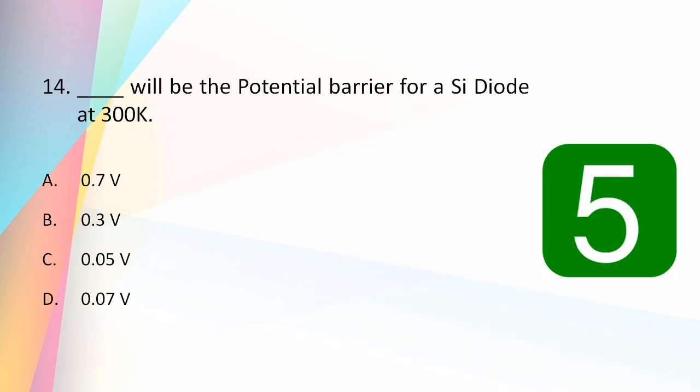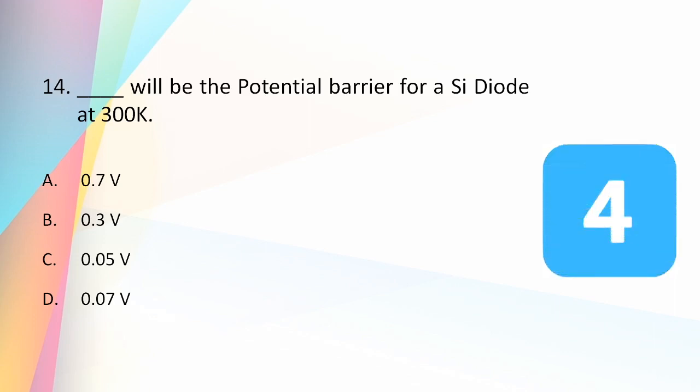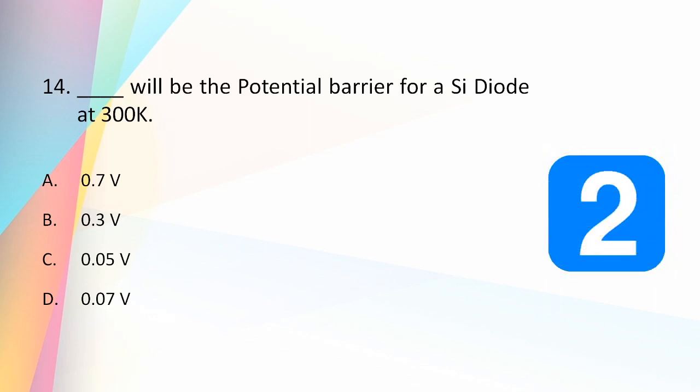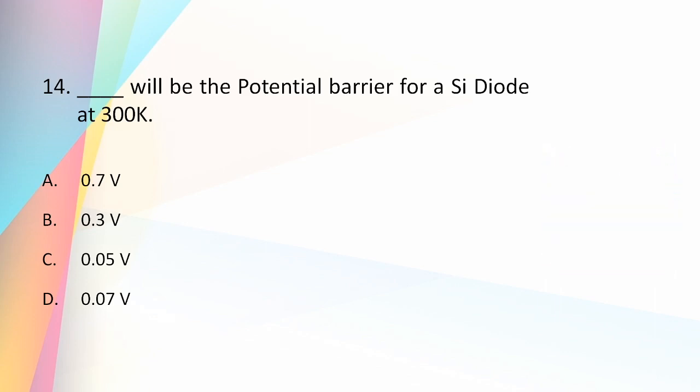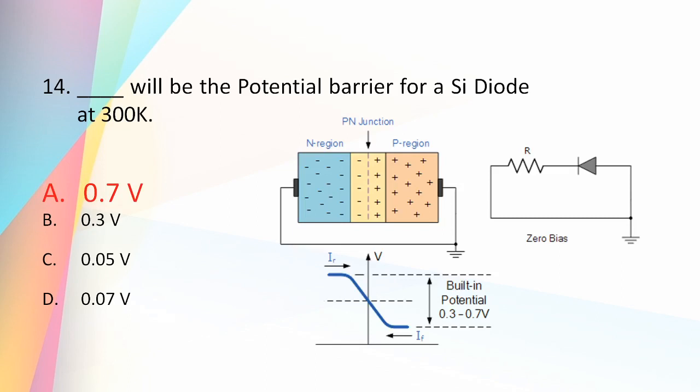The potential barrier for a silicon diode at 300 Kelvin is 0.7 volts. This voltage also depends on temperature.